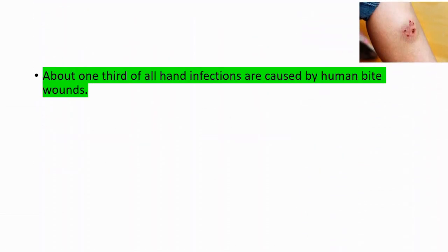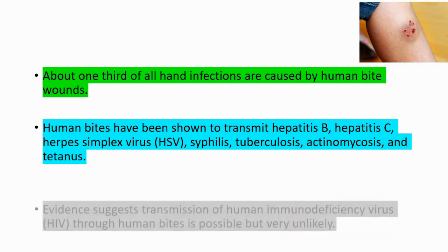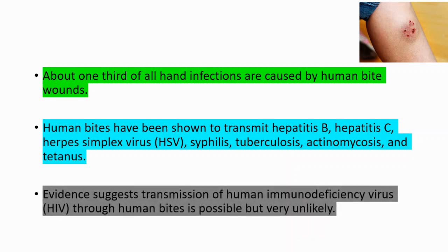It's pretty common — about one third of all hand infections are caused by human bite wounds. Human bites have been shown to transmit a number of diseases, including hepatitis B, hepatitis C, herpes simplex virus, syphilis, tuberculosis, actinomycosis, and tetanus. Evidence also suggests that transmission of HIV through human bites is possible, but very unlikely.